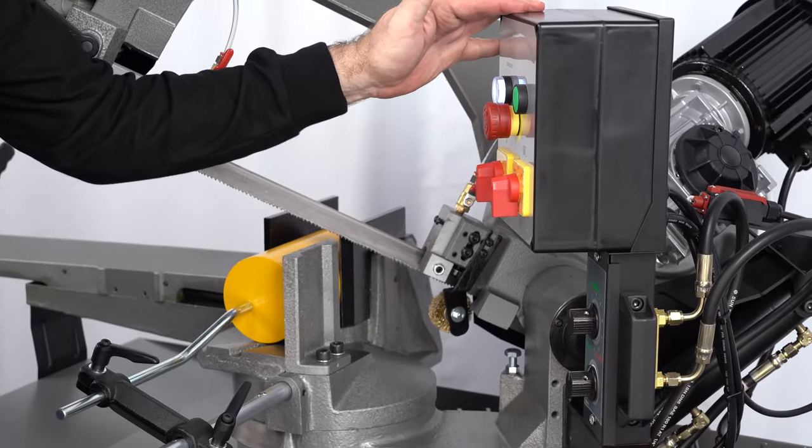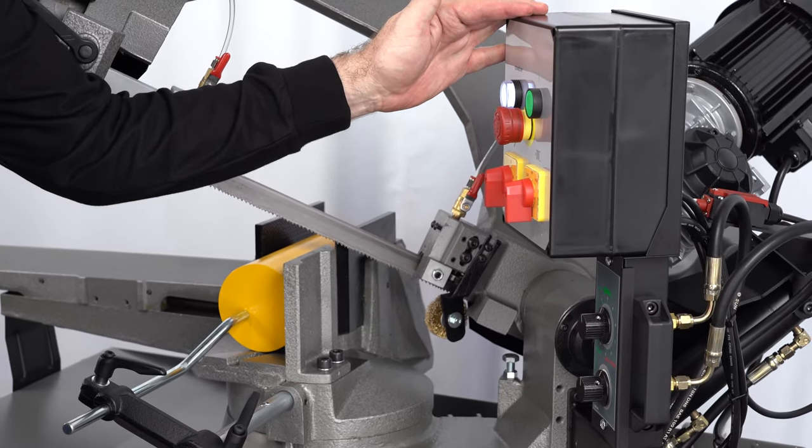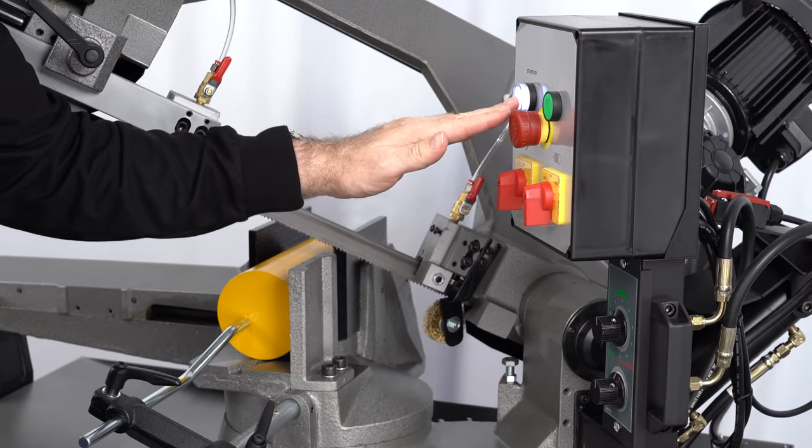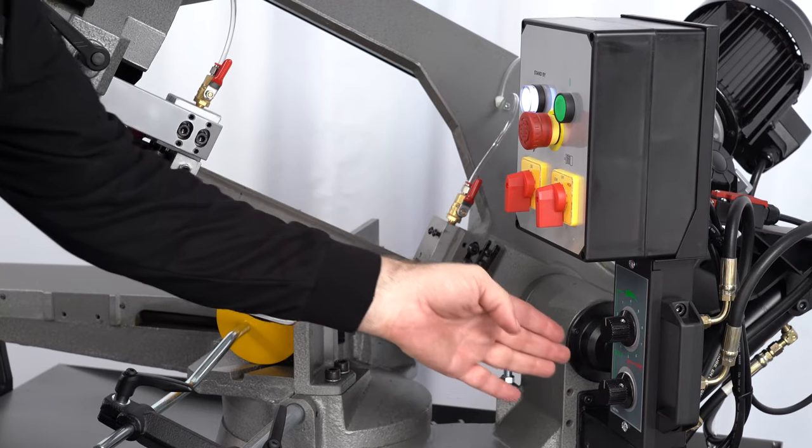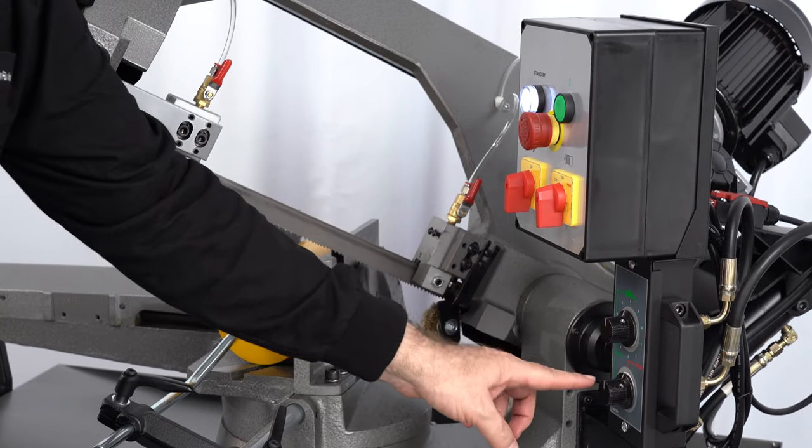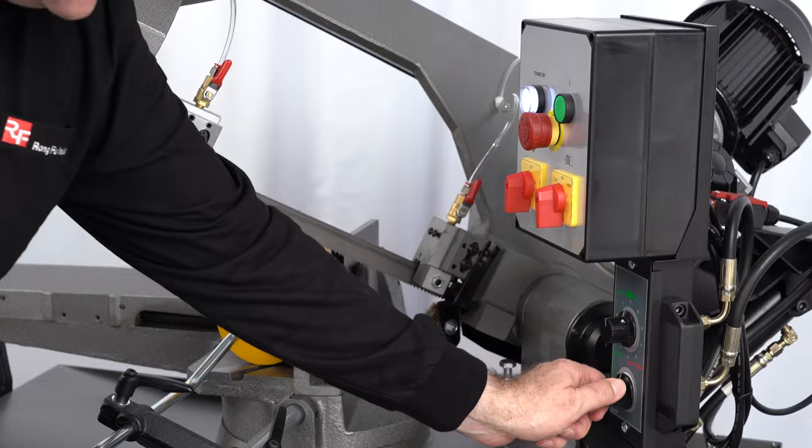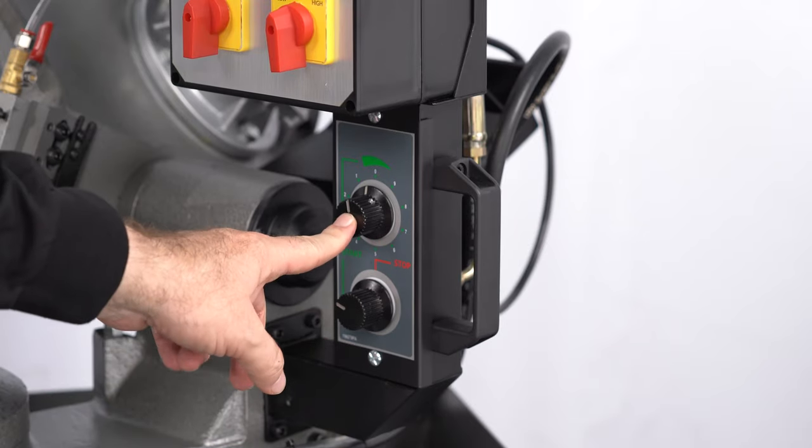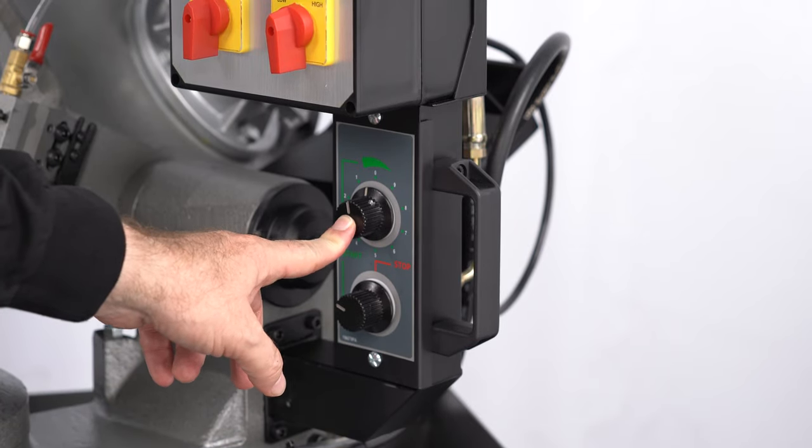The control panel on this machine is super simple and easy to use. Once you have the machine on, the first thing we're going to do is set the feed rate, which we do down here. First I'm going to unlock the feed, and then I'm going to move the blade down close to the workpiece using the feed rate control.